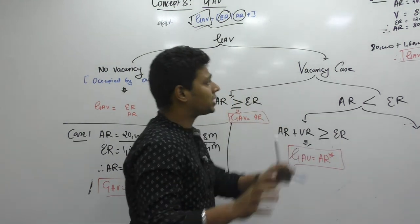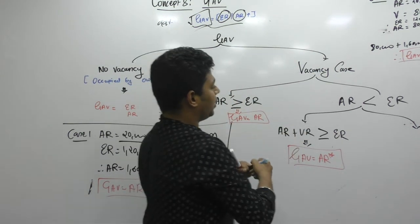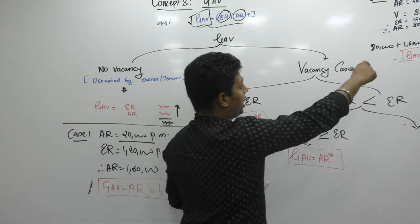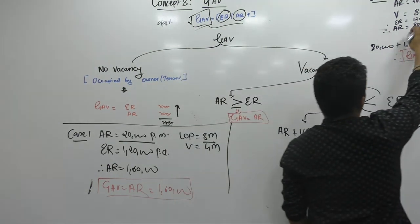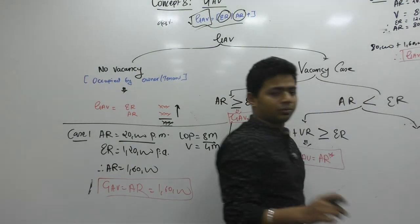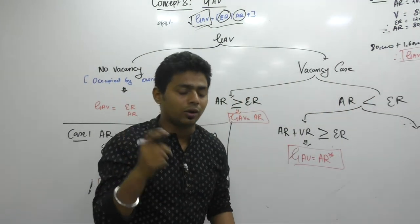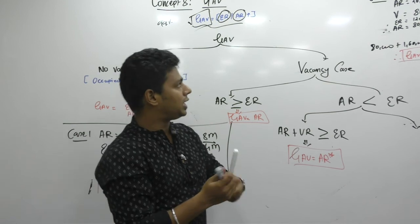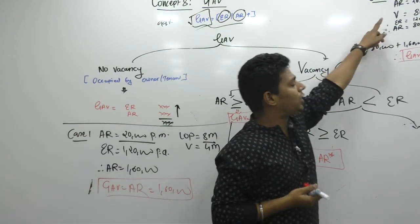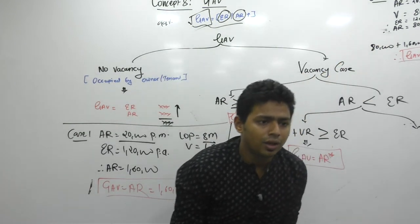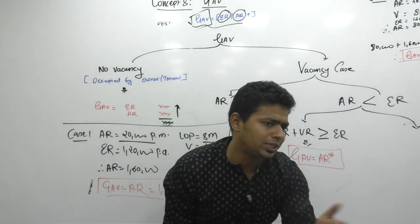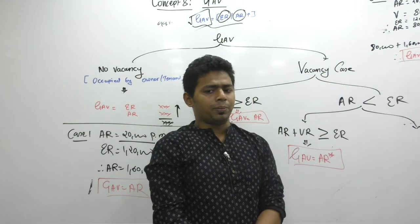Just one last case. Case 3. If my actual rent was 5,000 rupees per month — same setup — what will the total actual rent be for the let-out period?